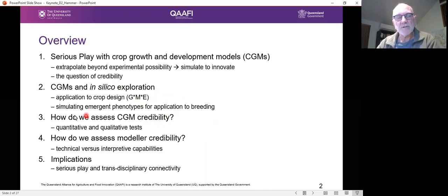And then the third part is really about if we need credible models to do the in silico exploration, how do we assess CGM credibility? The fourth point is then how do we assess modeler credibility. So it's not only about having a model that works, it's people who use them have to understand them and have both technical and interpretive capabilities to use them with credibility. And I'll come back to some broader implications about serious play with models and how connectivity across disciplines is needed to really make it work.